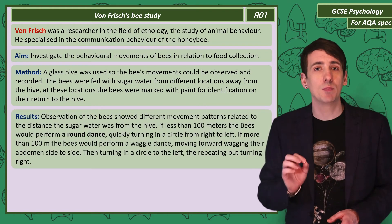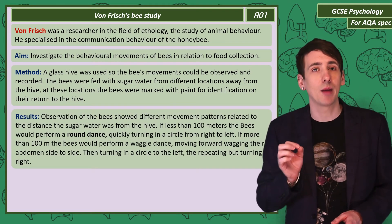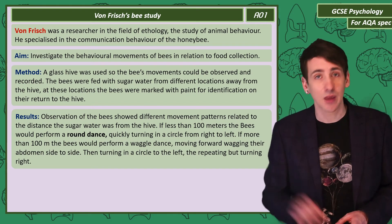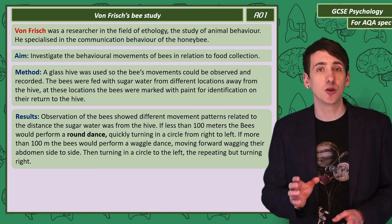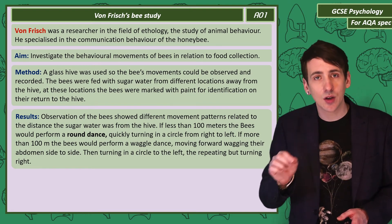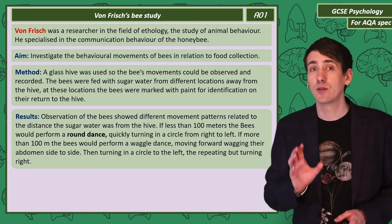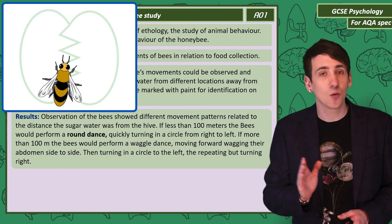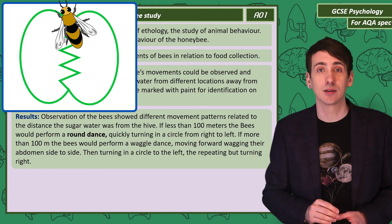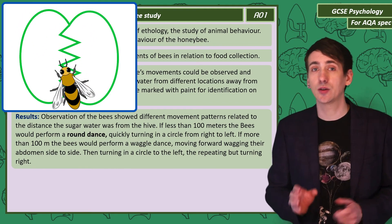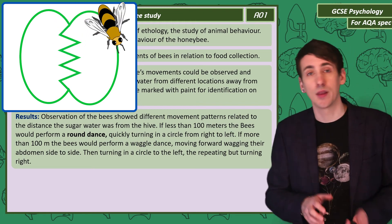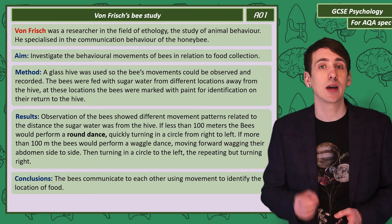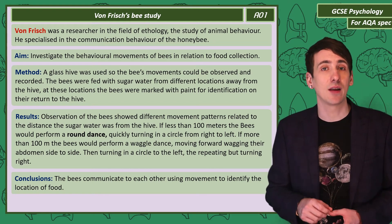Von Frisch found that when the bees returned to the hive, their movement patterns were related to the distance the sugar water was from the hive. If the food was less than 100 metres away, the bees would do a round dance, turning in a circle from left to right. But if the food was more than 100 metres away, the bees would do a waggle dance — moving forwards and waggling their abdomen from side to side, then turning in a circle to the left, and repeating the movement turning to the right. He concluded that bees communicate using movement to identify the location of food.